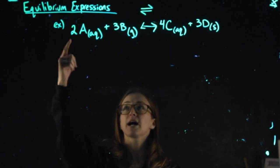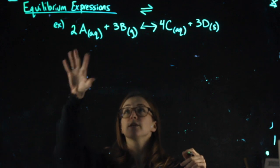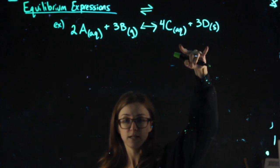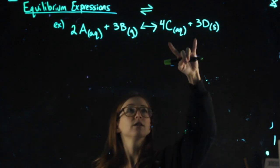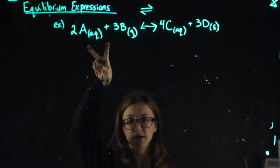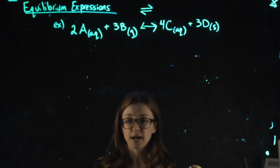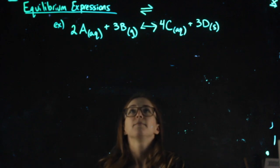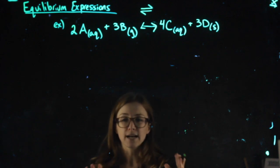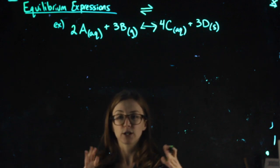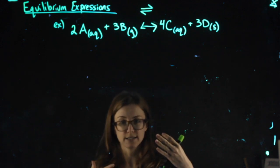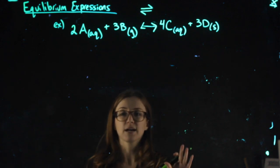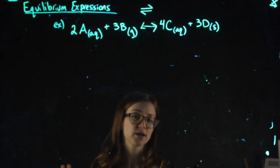And so what that means is that this reaction can happen in the forward direction where A and B turn into C and D, or the reverse direction where C and D turn into A and B. And actually what's happening is it's generally happening in both directions at equal rates. And whatever that rate is, we end up with this kind of magic ratio of products to reactants. That when it's at that ratio, we know we're at equilibrium.